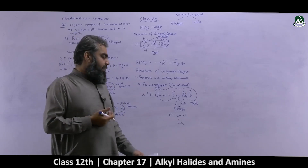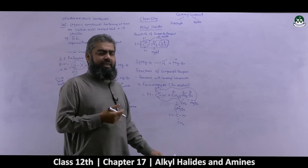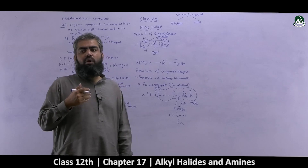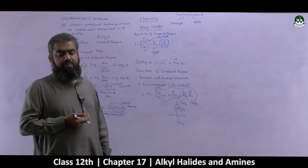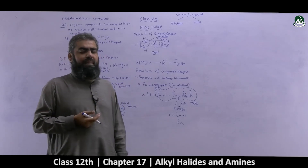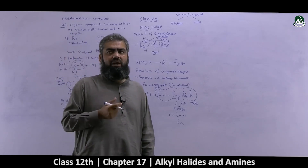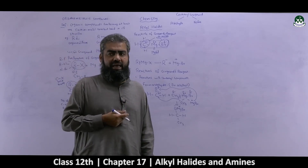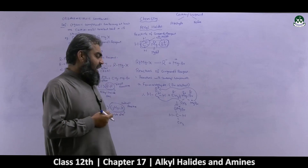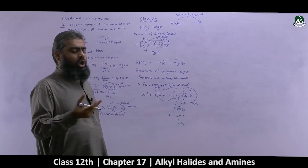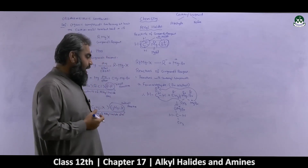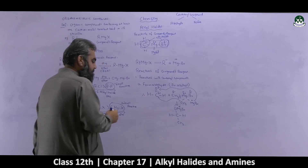This was step number one, resulting in the formation of an unstable intermediate. In step number two, you carry out the hydrolysis of this unstable intermediate — meaning its reaction with water — and you will get the corresponding alcohol.